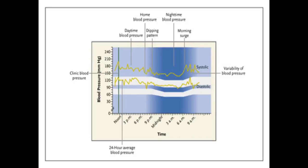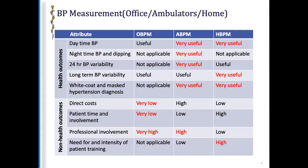If you look carefully at someone's blood pressure readings, there is a big variation in those measurements. Sometimes it goes high, sometimes it goes down. There is something called a dipping pattern, nighttime blood pressure, and something like a morning surge. There is a lot of variability in blood pressure, which is why there are three different types of blood pressure measurement already in practice: office blood pressure measurement, ambulatory blood pressure measurement, and home blood pressure measurement.